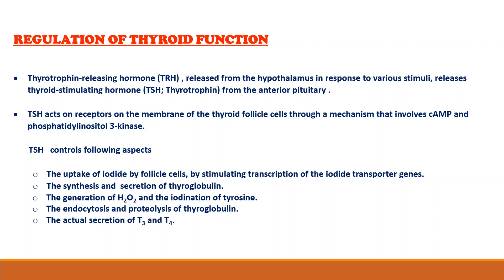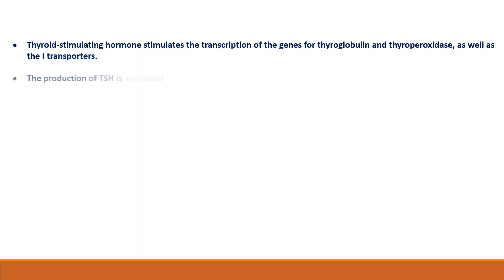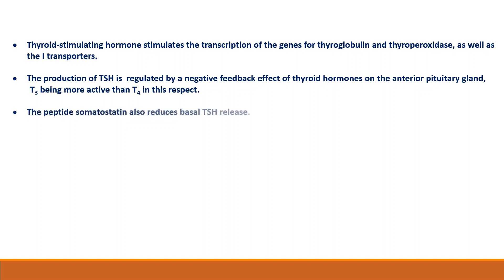TSH also controls endocytosis and proteolysis of thyroglobulin, secretion of T3 and T4, and blood flow through the glands. Thyroid-stimulating hormone stimulates the transcription of the genes for thyroglobulin, thyroperoxidase, as well as iodide transporters. The production of TSH is regulated by a negative feedback effect of thyroid hormone on the anterior pituitary gland, T3 being more active than T4 in this respect. The peptide somatostatin reduces the basal TSH release.